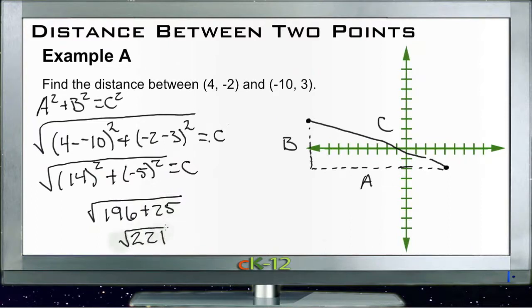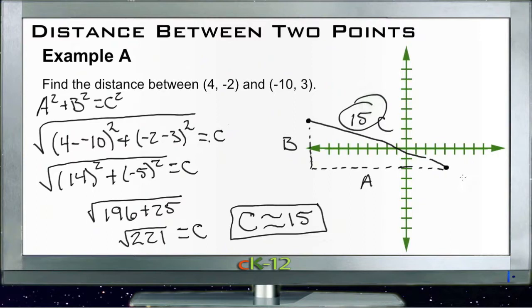So the square root of 221 equals c, and the square root of 221 is about equal to 15. 225 would be exactly 15, so 221 is pretty close. So c is 15 and that distance between the two points is 15 units. Alright, let's take a look at Example B.